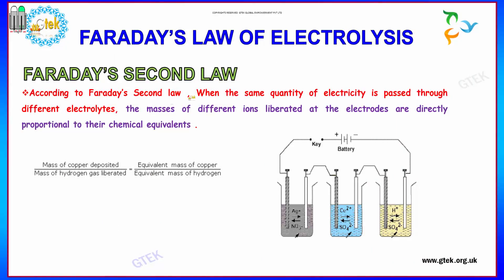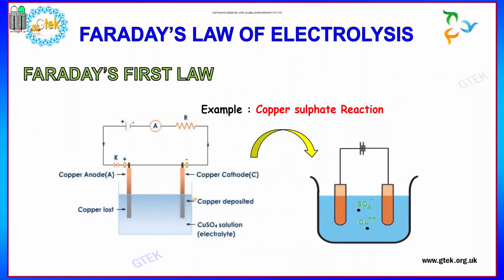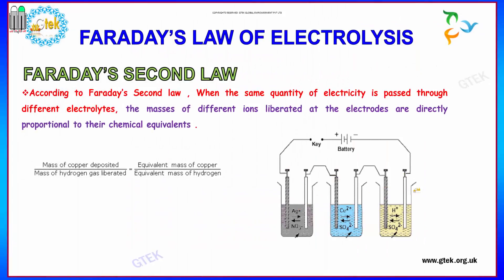For Faraday's second law: in the first law, we had one group of materials to check the deposition. That deposition depends on the electricity passed. In Faraday's second law, you have multiple items. When the same quantity of electricity is passed through different electrolytes, the masses of different ions liberated are directly proportional to their chemical equivalents. For example, mass of copper deposited divided by mass of hydrogen liberated equals their equivalent masses.